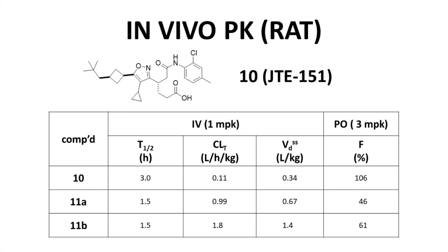The PK study dosed rats with a single 1 mg/kg IV dose and a single oral 3 mg/kg dose. Although the in vitro metabolic stability of all three compounds is very similar, the in vivo half-lives vary significantly, with compound 10 being much better. Compound 10 also showed a much higher oral bioavailability — essentially complete absorption. Based on these data, compound 10 was advanced into in vivo efficacy studies.